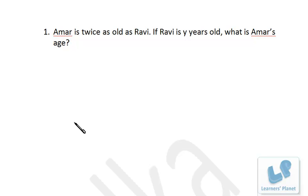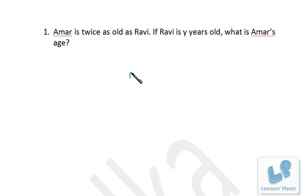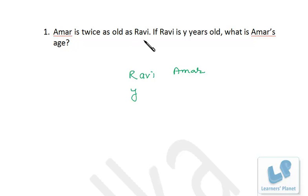We have a word problem: Amar is twice as old as Ravi. If Ravi is y years old, what is Amar's age? Ravi is y, and we have to find Amar's age. Amar is twice as old as Ravi, that means Amar is twice as old as y, so Amar is 2y.